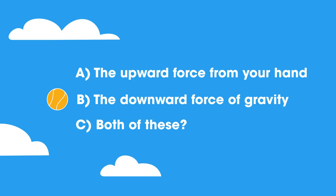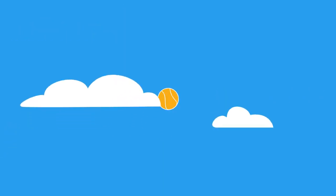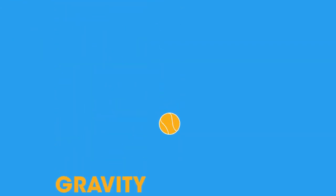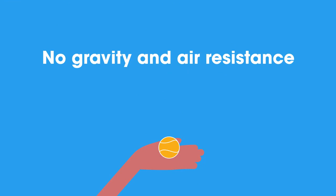The answer is just the downward force of gravity, which gradually slows the ball, stops it, then brings it back down, making it fall faster and faster. Without gravity and air resistance, the ball would just go on traveling in the direction of your throw.